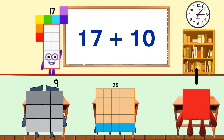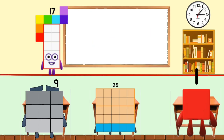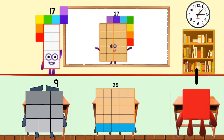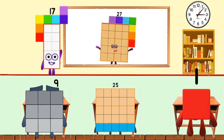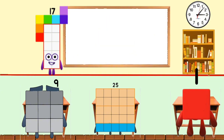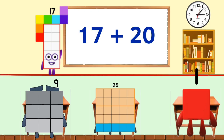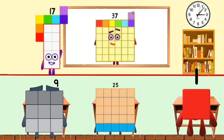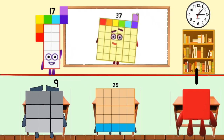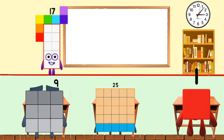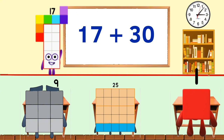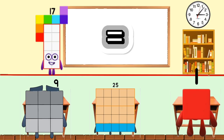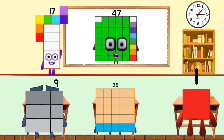17 plus 10 equals 27. 17 plus 20 equals 37. 17 plus 30 equals 47.